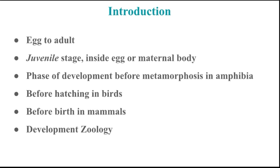Developmental Biology deals with all events of the entire development period in one organism across one generation. Development refers to the gradual transformation of the egg into a new adult individual. The developmental history of an individual from the egg to the adult is called ontogenic development.